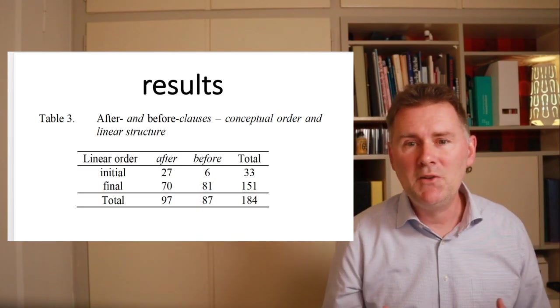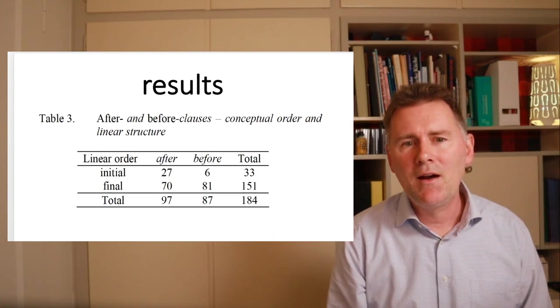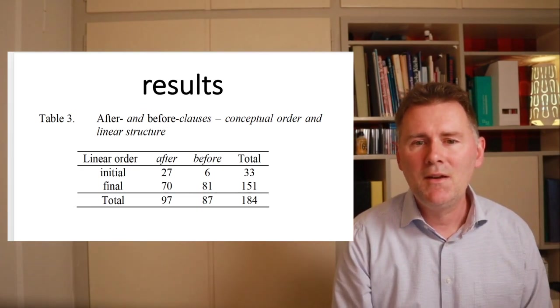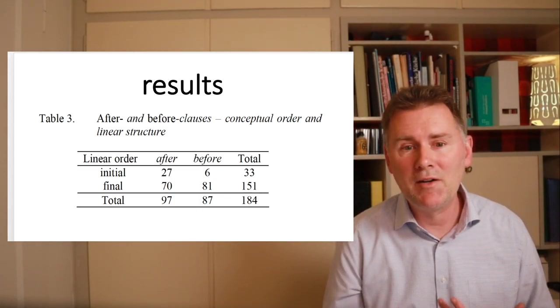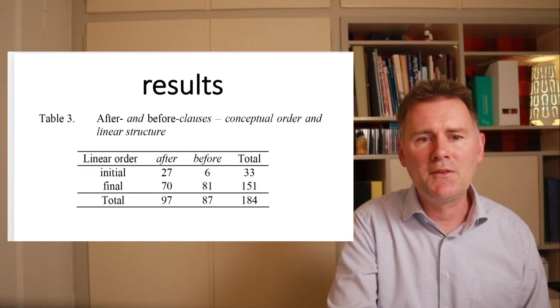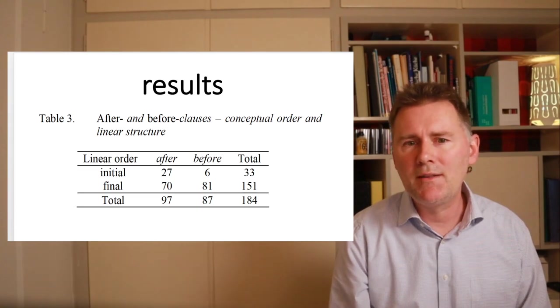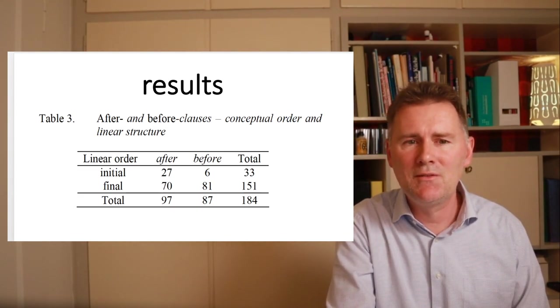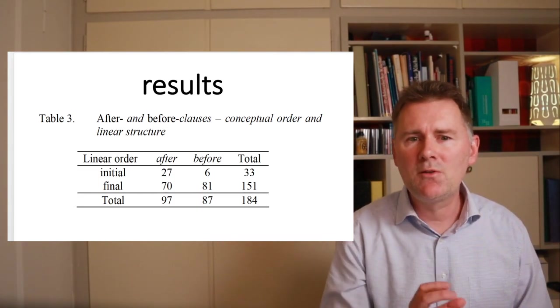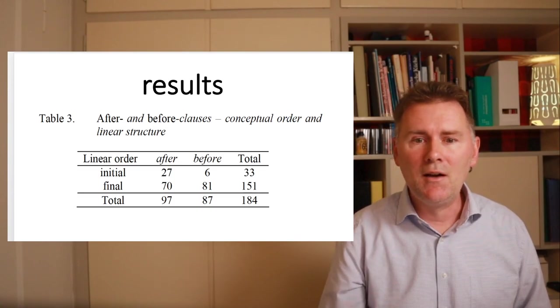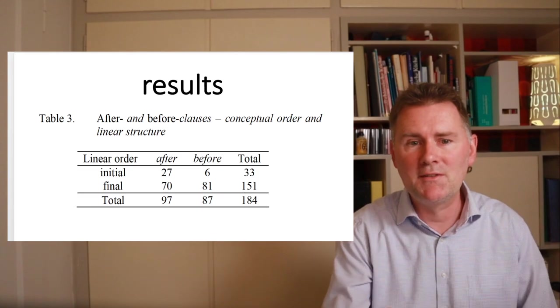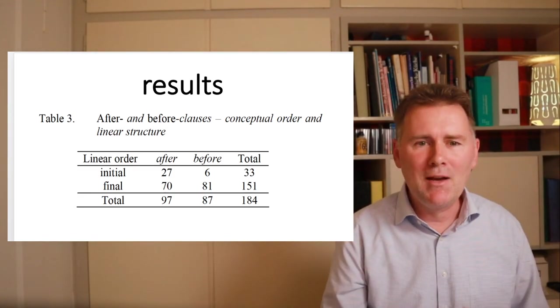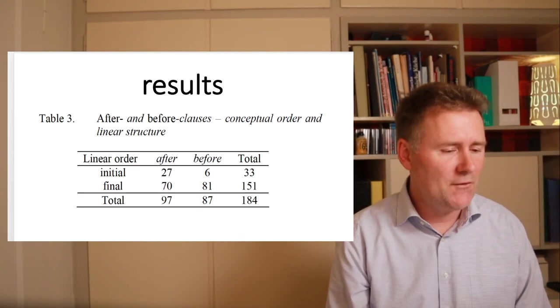So what the table shows is that before clauses are highly iconic. We find them at the end of the sentence, which is in line with Iconicity of sequence in 81 cases out of 87. So that is a very, very strong tendency. With regard to after clauses, they are also more frequently found at the end of a sentence. But about one in three examples is actually found sentence initially. So what we're seeing there is that generally adverbial clauses have a tendency to occur at the end of a sentence. And with before clauses, Iconicity of sequence reinforces this tendency. And with after clauses, Iconicity of sequence has to go against that tendency. And that results in a relatively higher proportion of initial adverbial clauses with after.